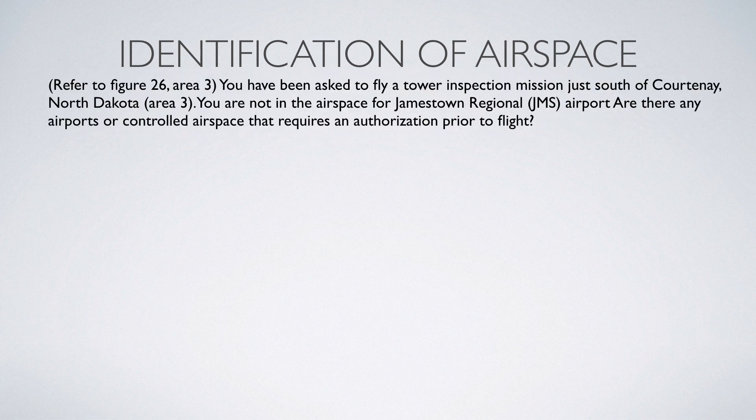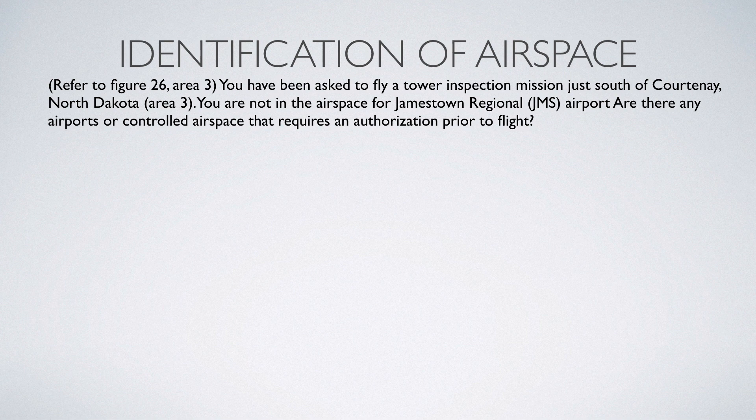Here's the question we're going to take a look at this week. We're going to look at figure 26 area 3 if you pull up the FAA supplement that would come with your test. The question is: you've been asked to fly a tower inspection mission just south of Courtenay, North Dakota — that's in Area 3. You're not in the airspace for Jamestown Regional Airport, which is just to the south. Are there any airports or controlled airspace that require an authorization prior to flight?